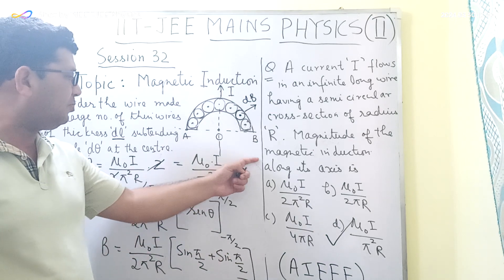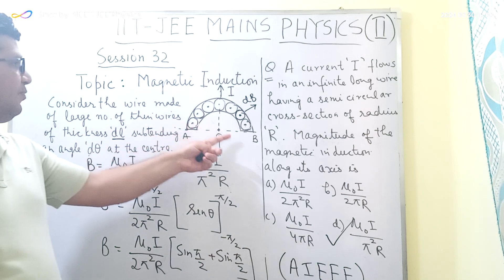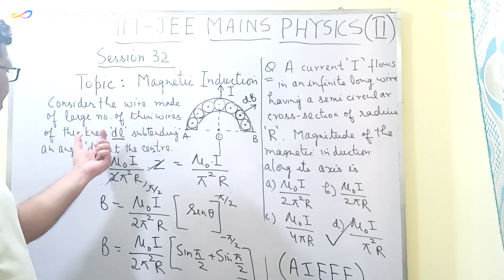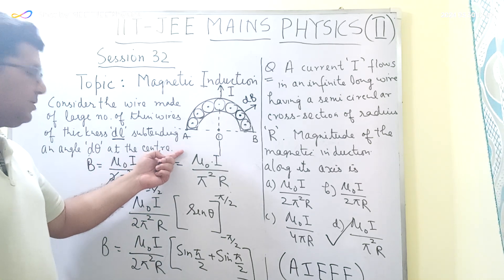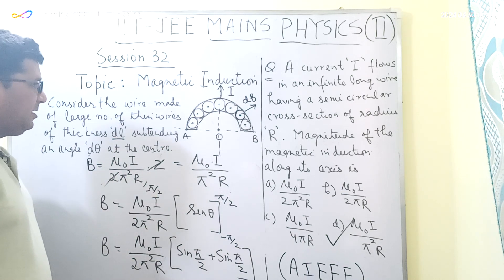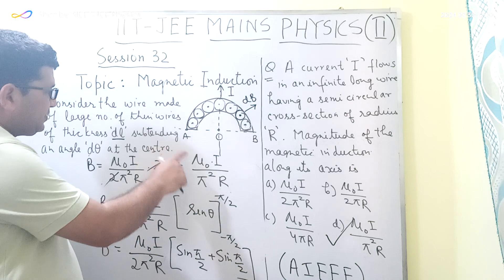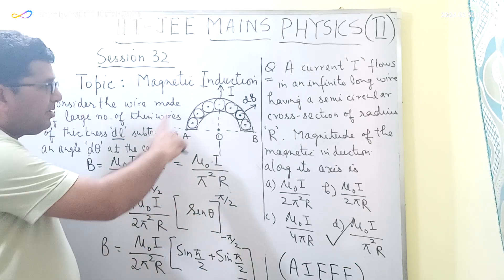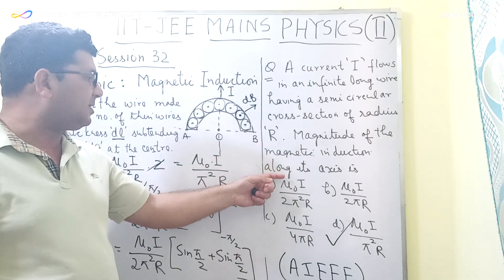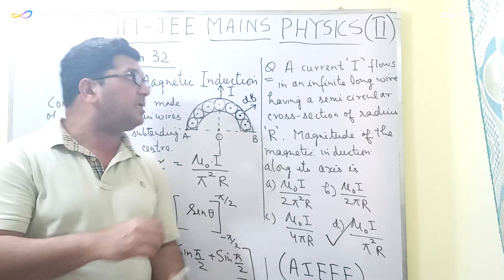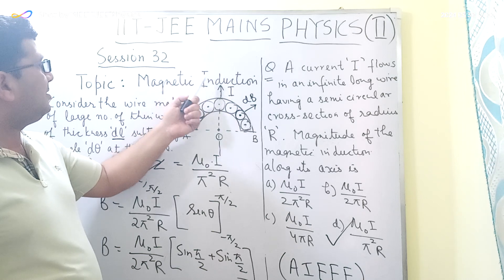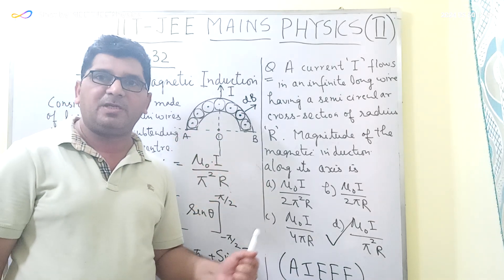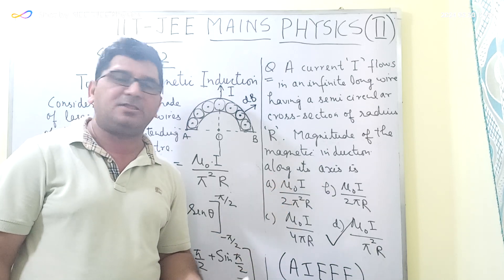I hope you have understood the solution to this question. The key idea is to consider this wire to be made up of a large number of thin wires of thickness dL, where each thin wire of thickness dL subtends an angle dθ at the center. We then found the magnetic field due to each thin wire and integrated from −π/2 to π/2 to get the total magnitude of the magnetic induction along the axis. In the next session I will continue with the same chapter on the magnetic effect of current with a different question from the IIT JEE Mains examination.